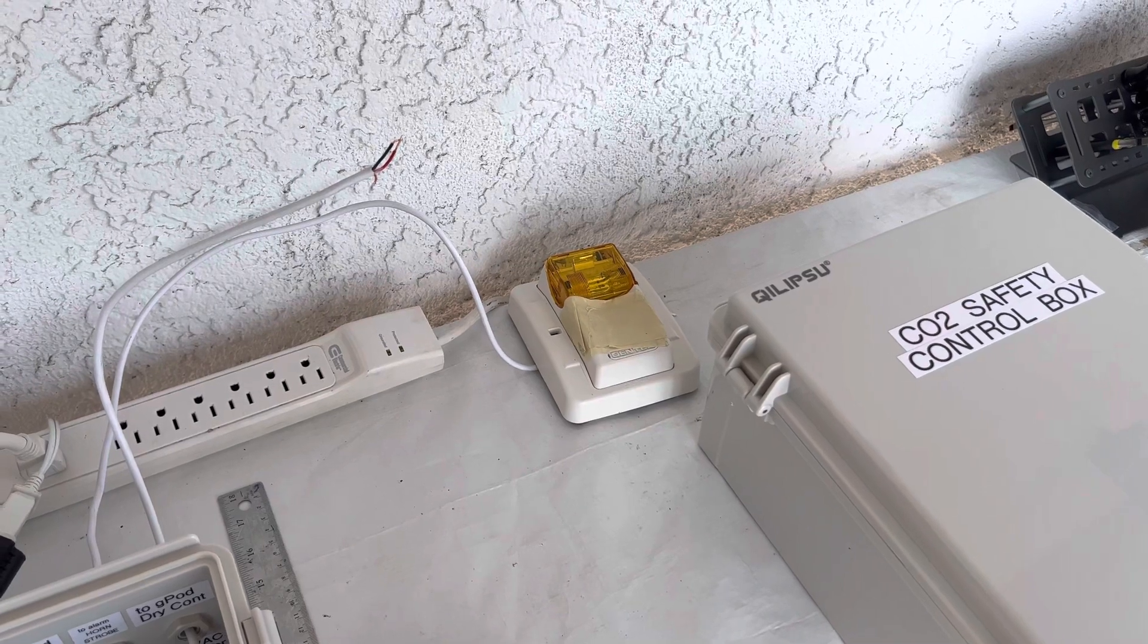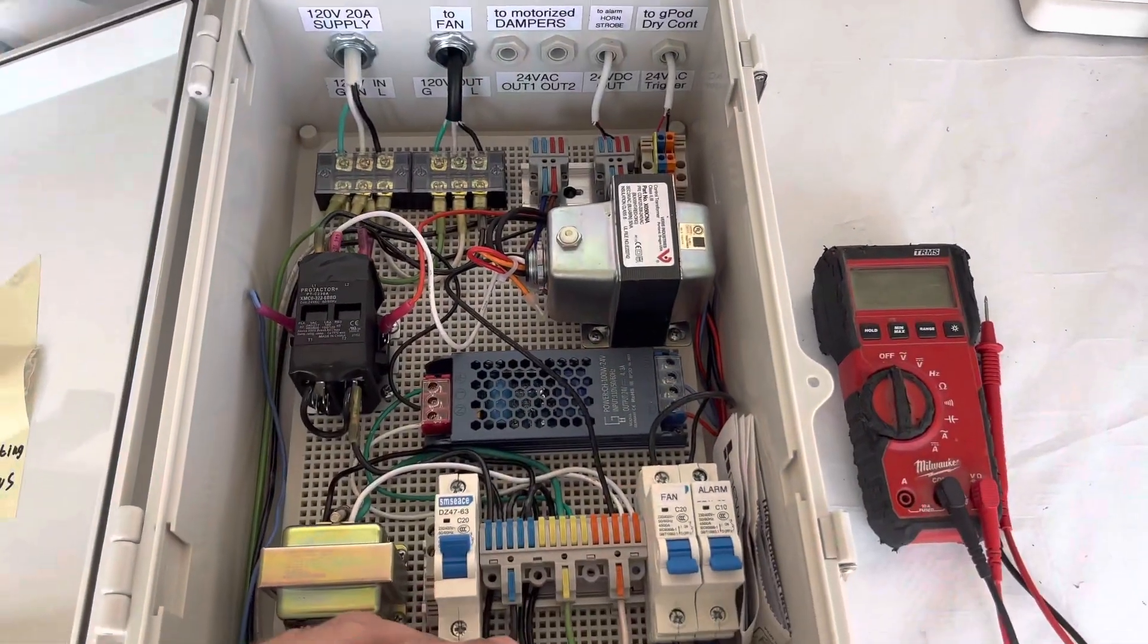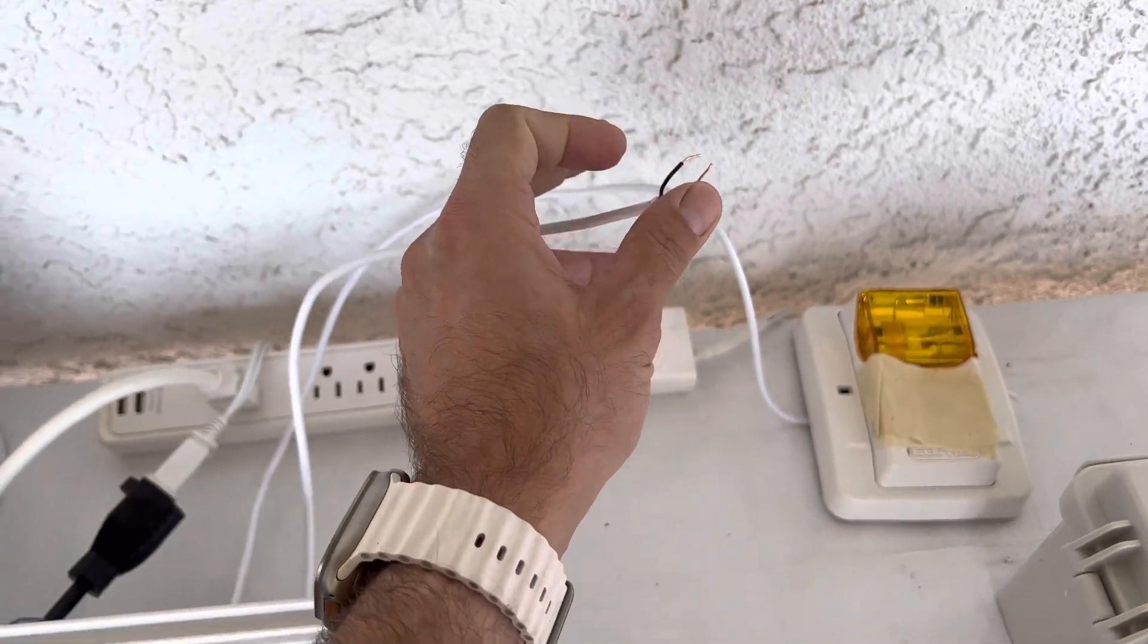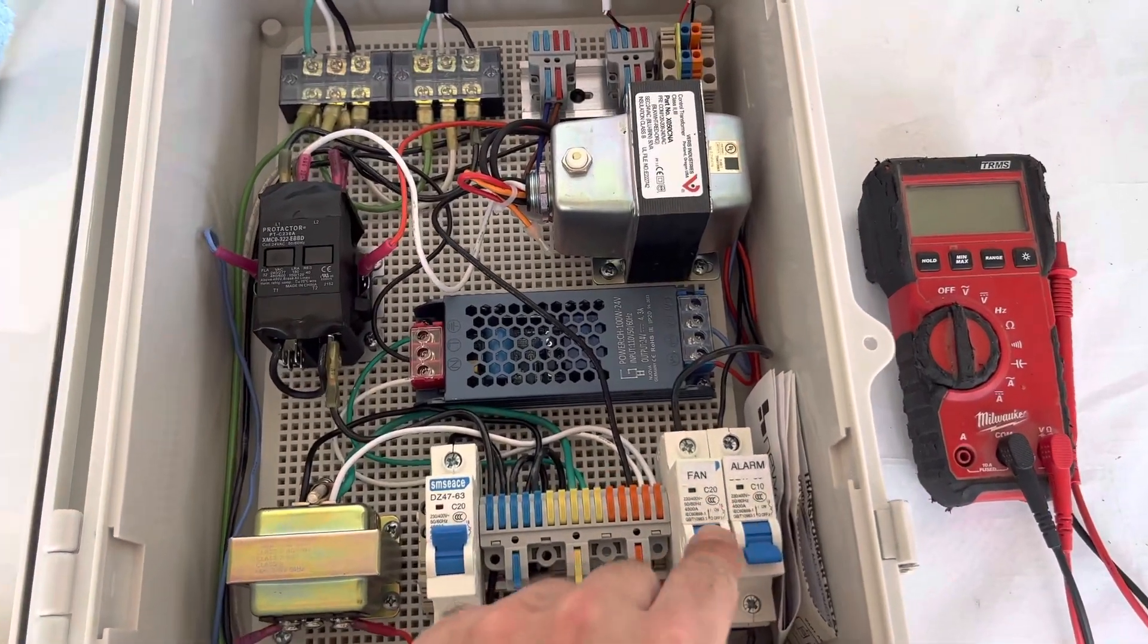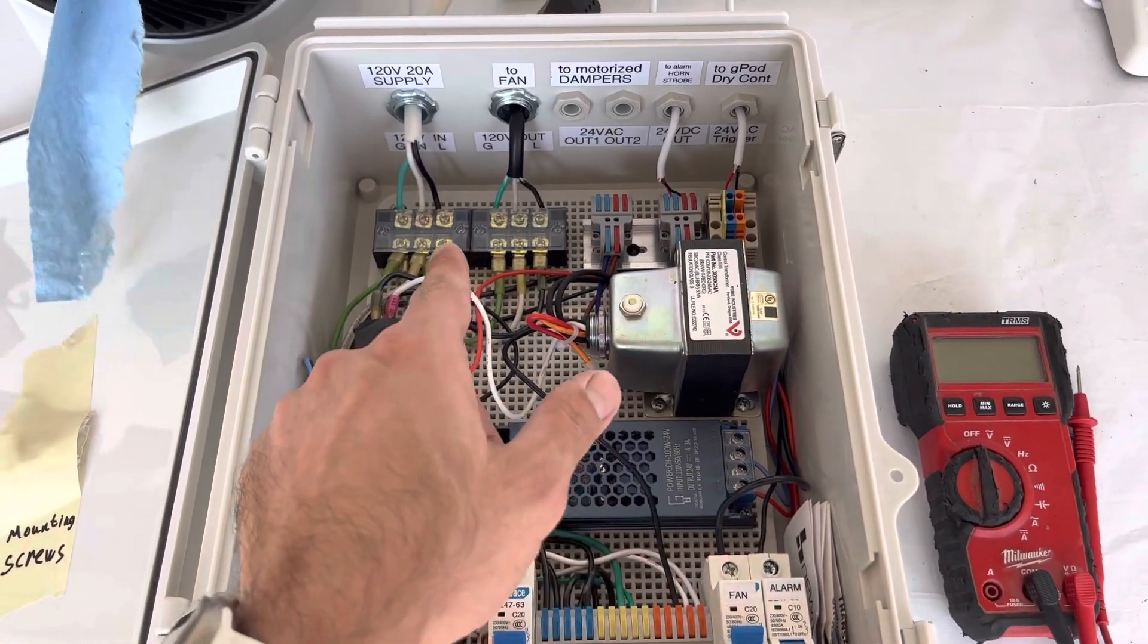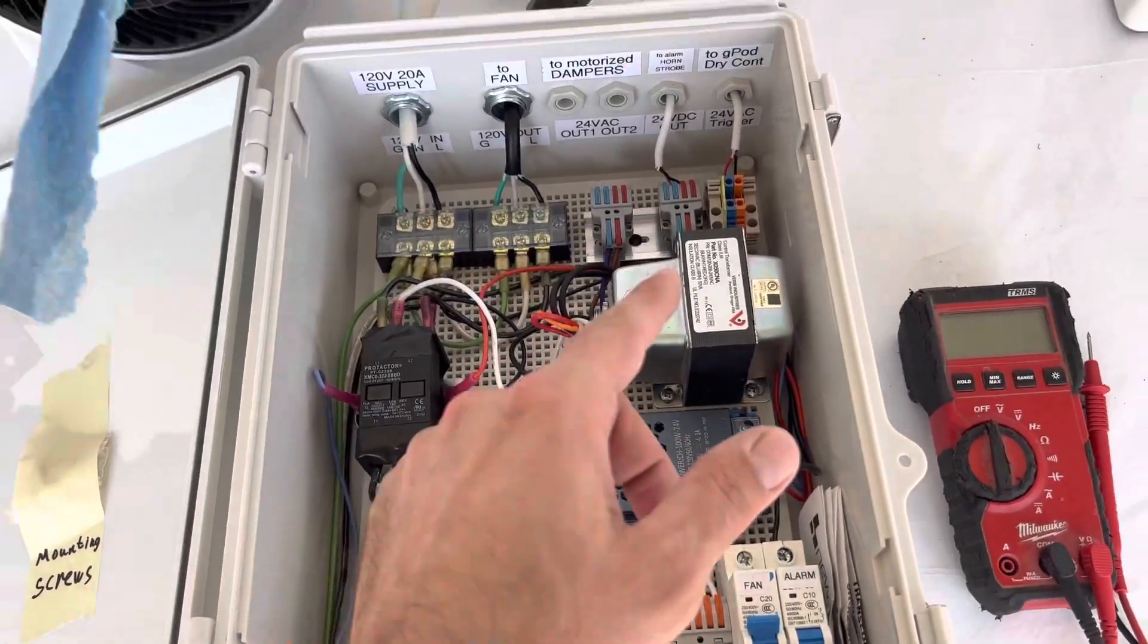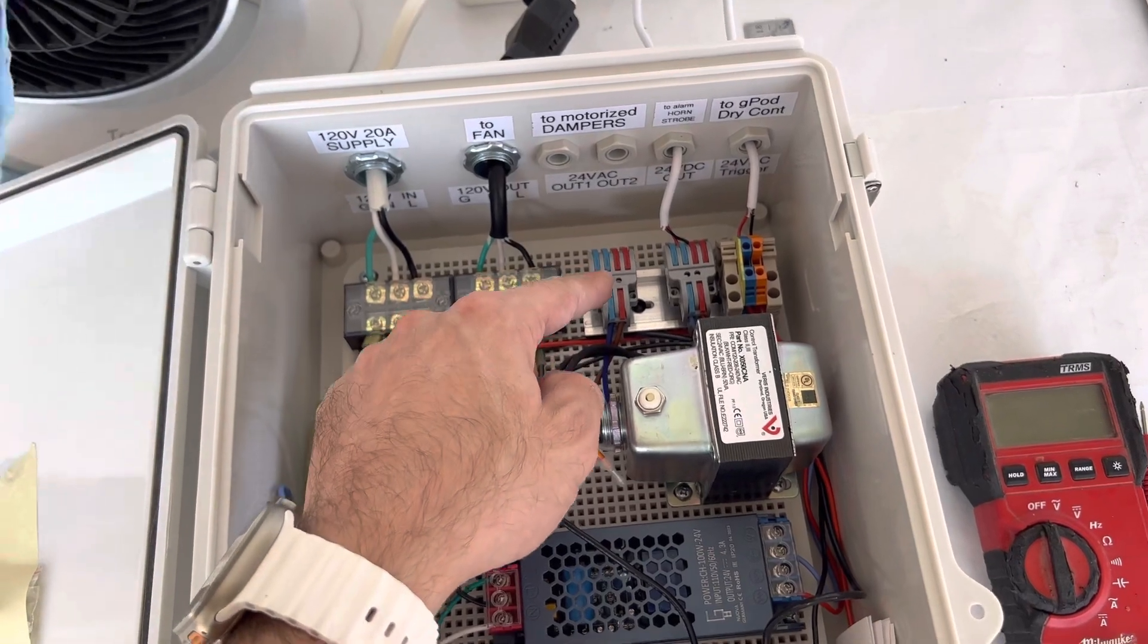When it resets, it goes back. But we also have a bypass manual - this is for the fan and dampers, so for AC and 120. Here the fan is on and dampers will open. We have 24 volt AC here right now.